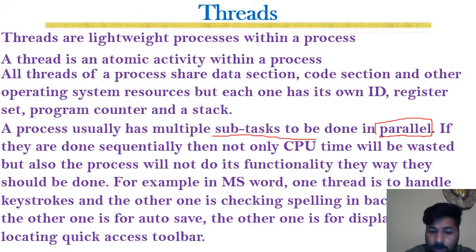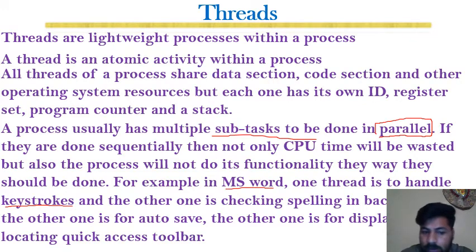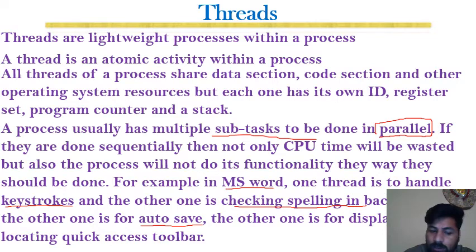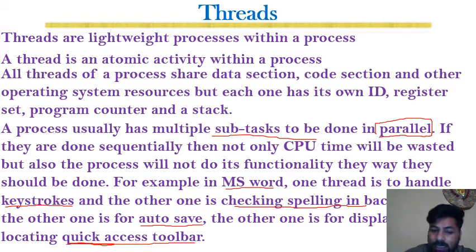For example, consider MS Word as a process. One thread handles keystrokes from the keyboard. Another thread checks spelling in the background. Another thread handles auto-save, periodically saving the data. Yet another thread locates and displays the quick access toolbar. So you can see that although we have one original process — MS Word — that process actually has a lot of threads.